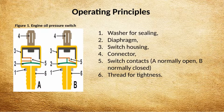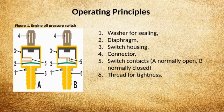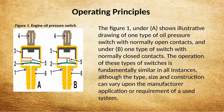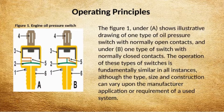The oil pressure switch consists of the following components: 1. Washer for sealing, 2. Diaphragm, 3. Switch housing, 4. Connector, 5. Switch contacts — A. Normally open, B. Normally closed, 6. Thread for tightness. Figure 1A shows an illustrative drawing of a switch with normally open contacts, and Figure 1B shows a switch with normally closed contacts. The operation of these switch types is fundamentally similar in all instances, although the type, size, and construction can vary upon the manufacturer, application, or system requirement.